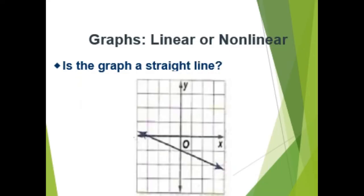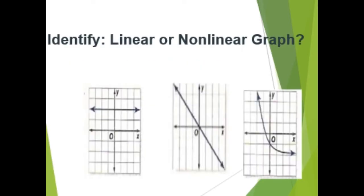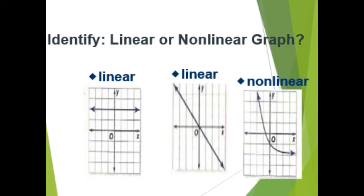Next example: linear or non-linear — is the graph a straight line? Yes, the graph is a straight line, so it is linear. Now it's your turn to identify linear or non-linear graphs. Our first graph is linear because it is a straight line. The second graph is a straight line, so it is linear. The third graph is not a straight line, so it is non-linear.